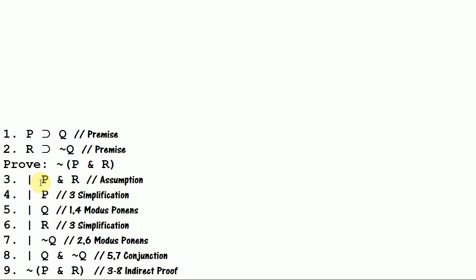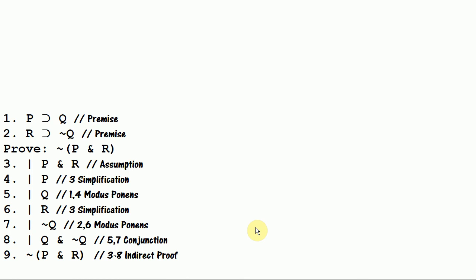And an indirect proof could work in another way — we could have started with a negation of something, and when we finish the indirect proof we could just drop the tilde instead. Okay, now let's take another look at double negation and show you how to prove double negation using indirect proof. So once again we want to prove P if and only if not not P.